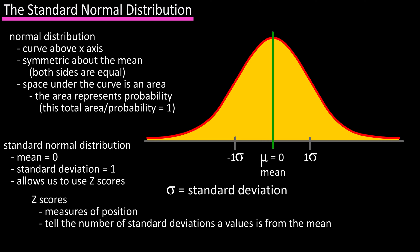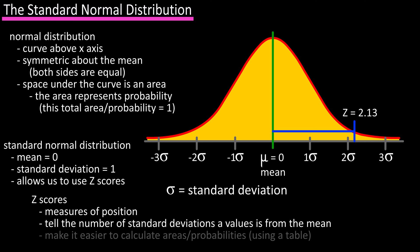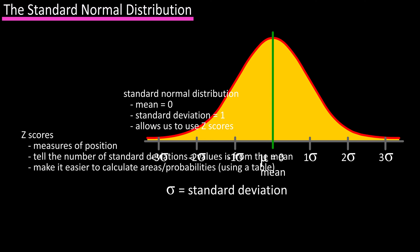For instance, if we had a z-score of 2.13, that would be this line here on our standard normal distribution graph. So it is 2.13 units or standard deviations from the mean. Z-scores are important because they make it much easier to calculate areas, which are probabilities.